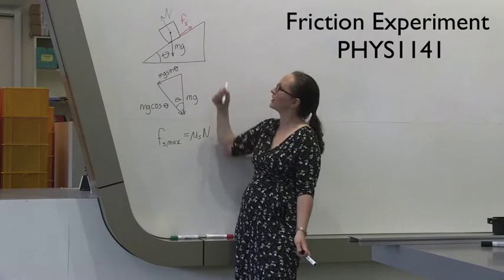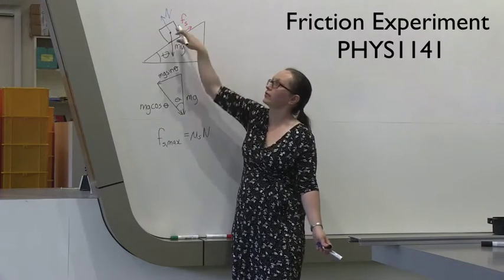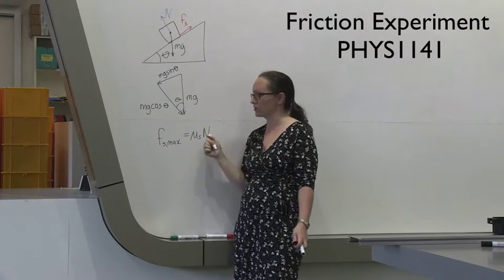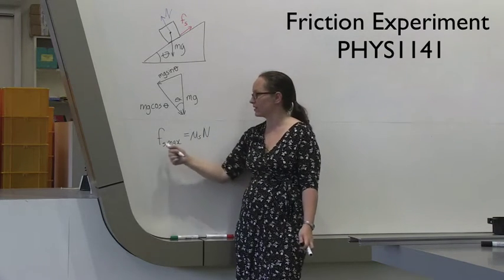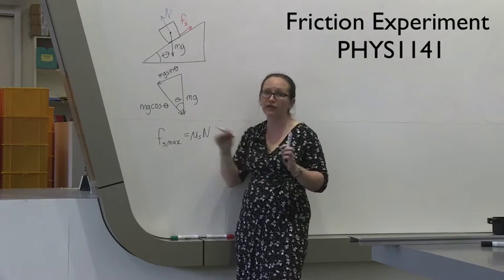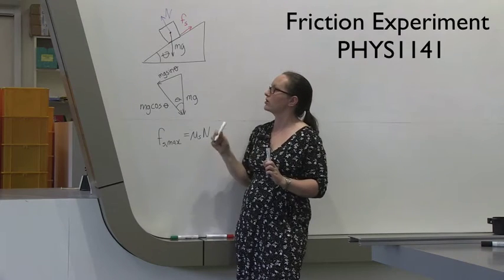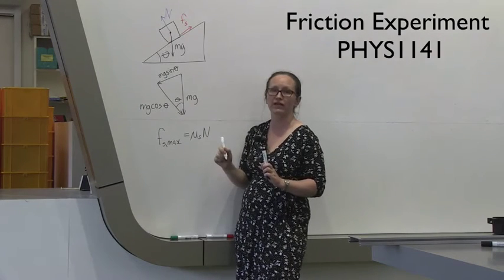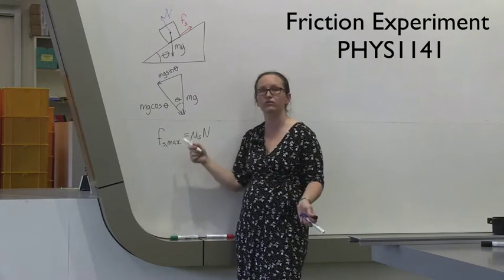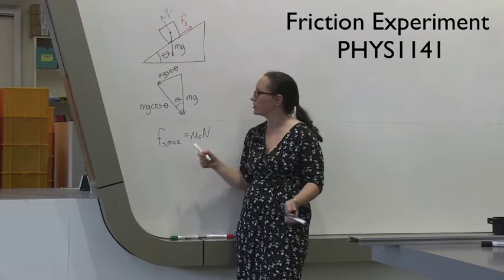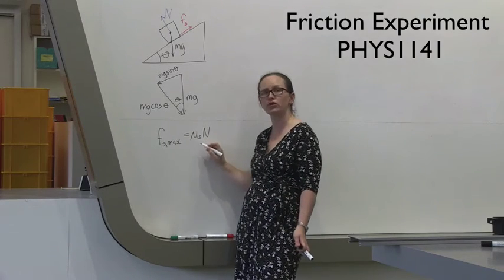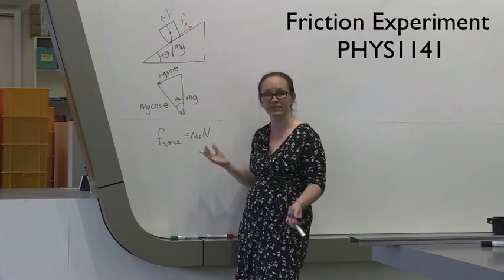Now n, you can work out by considering that in equilibrium, the forces perpendicular to the plane are balanced. So you can work out what n is. For the maximal frictional force, you can use the forces parallel to the plane are balanced. So we know what the weight force parallel to the plane is, and you can use that to work out what is the maximal frictional force. So you'll need to come up with your own method in order to measure mu s, making use of some of this physics.